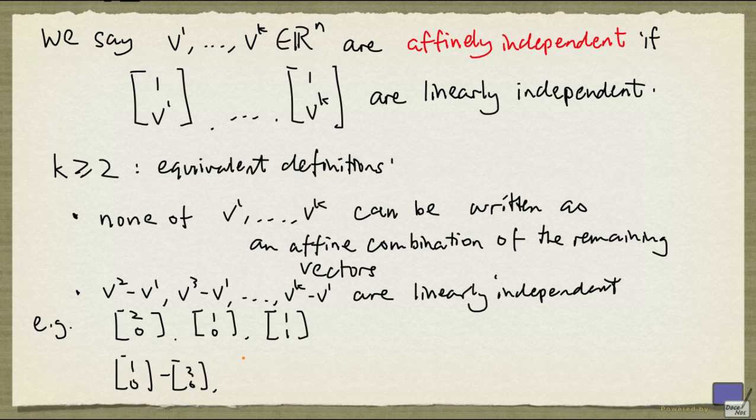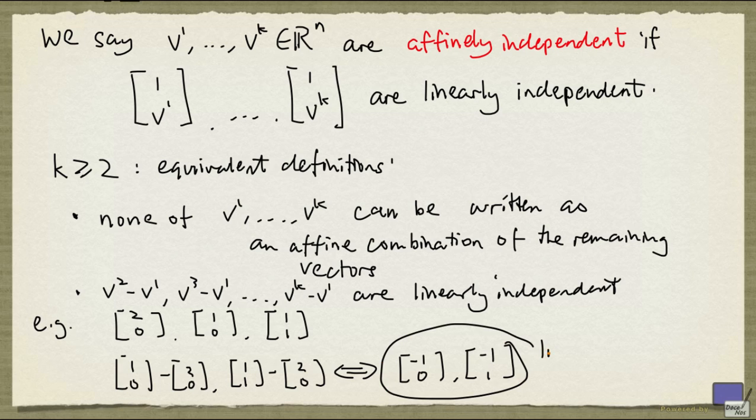and (1,1) minus (2,0), and see if they are linearly independent. Now these two vectors are (-1,0) and (-1,1) respectively. And these are clearly linearly independent. And so these three vectors here are affinely independent.